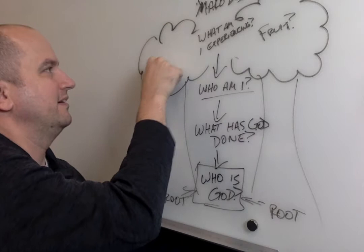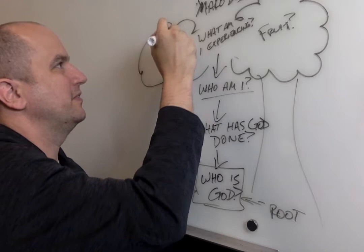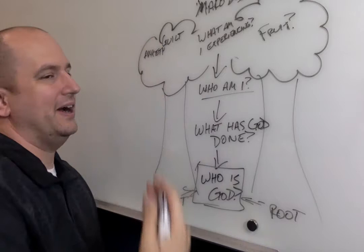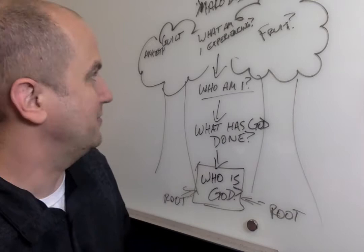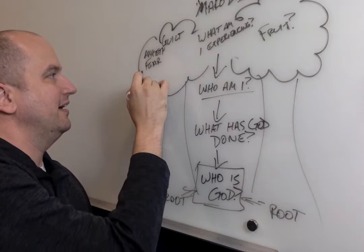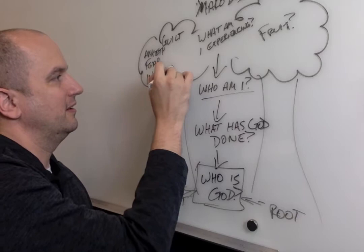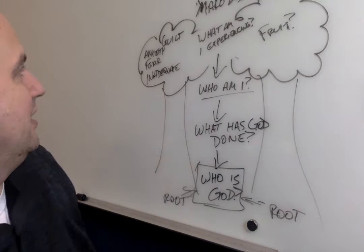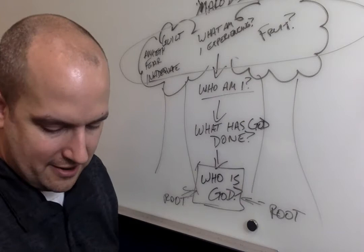And we went through, we were like, what fruit are we experiencing in our own disciple making? And it was like, oh, we're experiencing guilt for not doing more or we experienced anxiety. Why do we experience anxiety? Well, we experience it because of, you know, well, whatever we're going to get down here. What else do we experience? Well, I have fear, which is kind of like anxiety, but different. I feel inadequate.